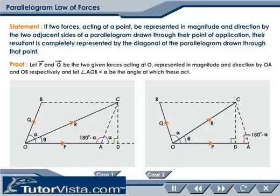Let P and Q be the two given forces acting at O, represented in magnitude and direction by the sides OA and OB respectively of the parallelogram OACB. Let angle AOB equal alpha be the angle at which these two forces act. Alpha may be acute or obtuse.